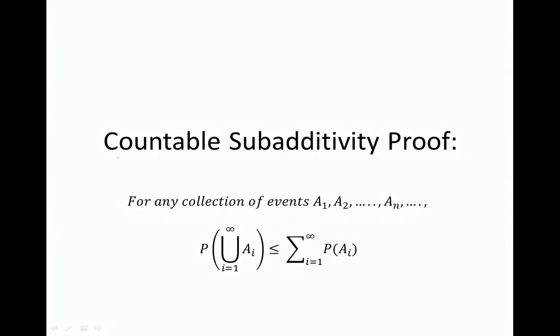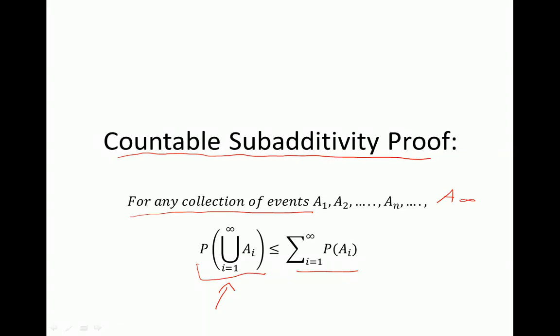Welcome back to the countable sub-additivity proof. In this proof I show that the probability of the union of many events is less than or equal to the sum of probabilities of all the events. The proof states that for any collection of events A1, A2, ... An to infinity, the probability of the union is never greater than the sum of probabilities of those events.